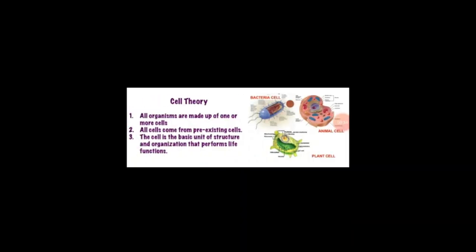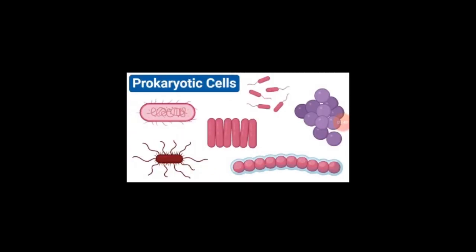The main postulates of cell theory are: all organisms are made up of one or more cells; all cells come from pre-existing cells; and the cell is the basic unit of structure and organization that performs vital functions.